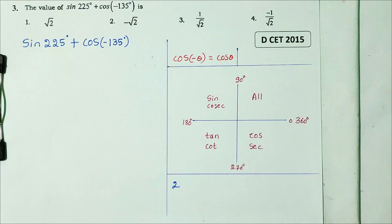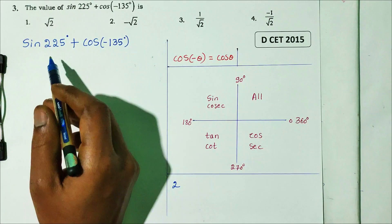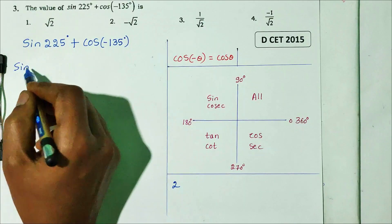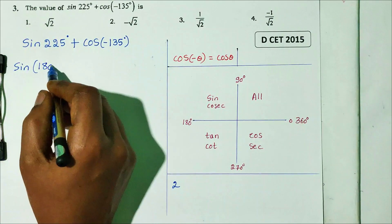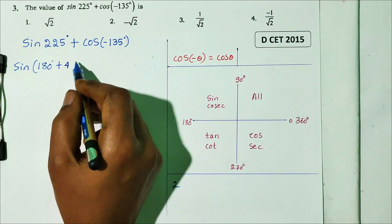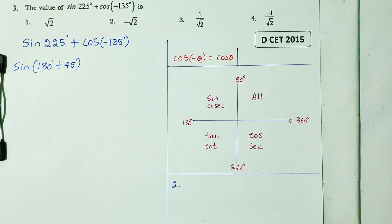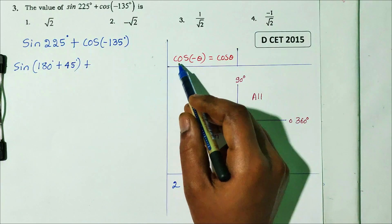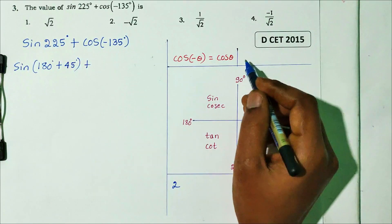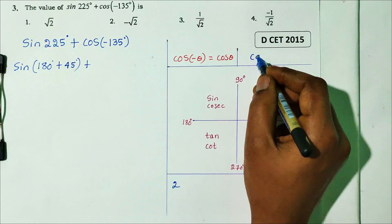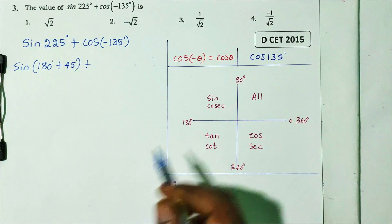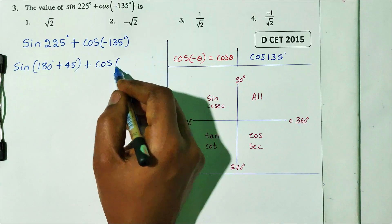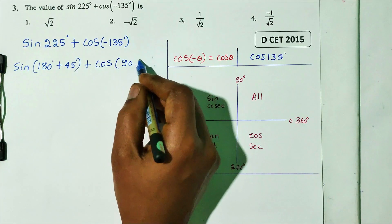First, sin225 = sin(180 + 45). Next, cos(−135): using the formula cos(−θ) = cosθ, we get cos135 = cos(90 + 45).